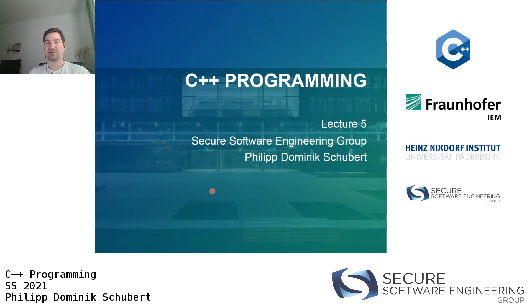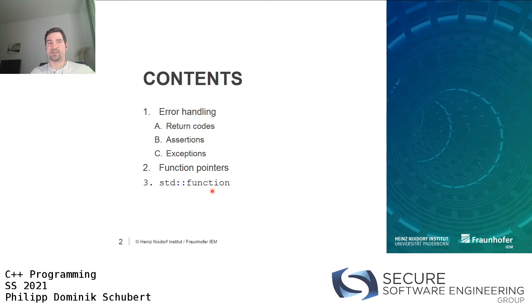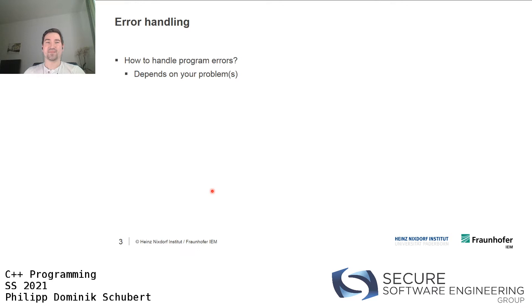Hi everybody, welcome back to our C++ programming course. Today we are going to talk about error handling and the various ways you can handle errors in C++. At the very end we will briefly talk about one other type of pointer, namely function pointers, and what you can do with them. But let's start with error handling and come to function pointers later on.